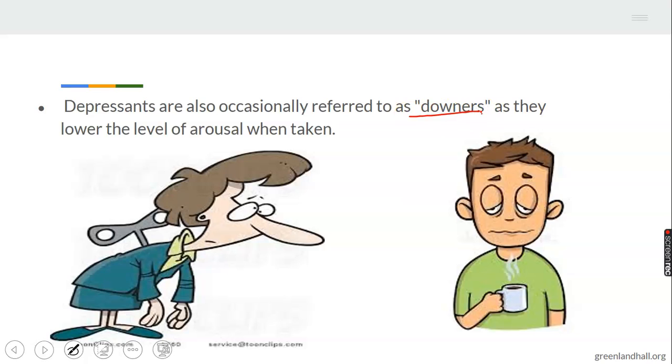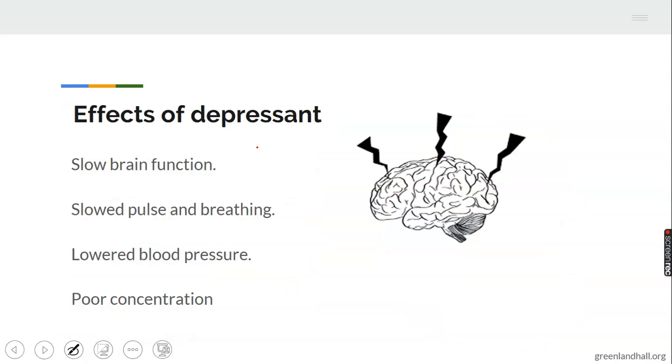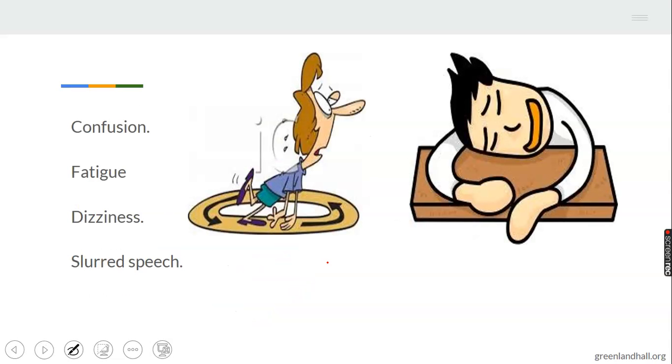Effects of depressants: you're going to have slow brain function, slow pulse and breathing, lower blood pressure, poor concentration. Your brain function will not be normal, it's going to be slow, like backward. You don't want that. You're going to have lower blood pressure. Your attention span is no longer there, it's reduced to the minimum because of the depressants. And also it leads to confusion, fatigue, dizziness, slurred speech. You are not agile, that's what it means.